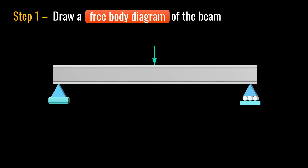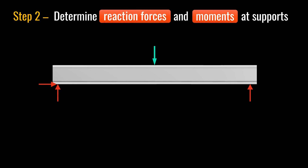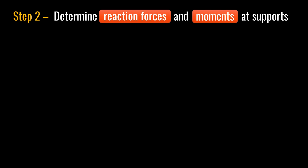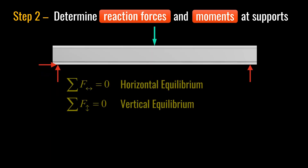To determine shear force and bending moment diagrams for a beam, there are three steps. First, draw the free body diagram showing all applied forces and reactions on the beam. The second step is to determine the reaction forces and reaction moments at supports using equilibrium equations, where the sum of all forces and moments must equal zero.